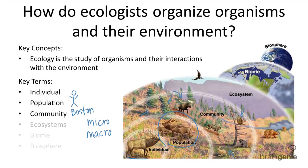Next you have an ecosystem, and this encompasses the community and the non-living environment, which is also known as the abiotic environment. So in the ecosystem you also have the water, the air, or the soil — these are all non-living things that are incorporated in the ecosystem.